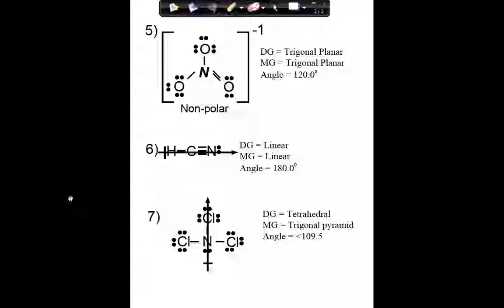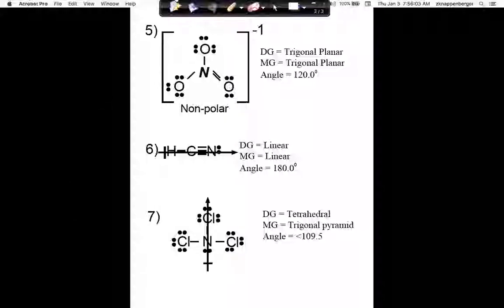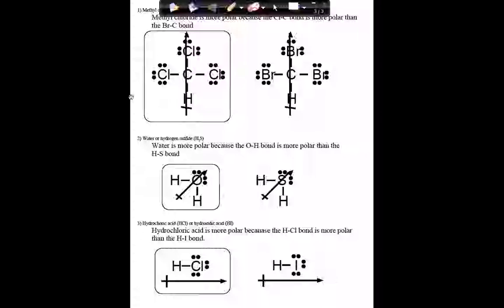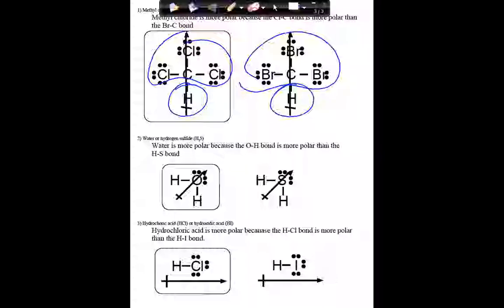The only part of assignment number two that we could do was the second page. We stretched it a little bit and talked about molecules being more polar than other molecules. Looking at example number one, we know this is polar because chlorine is not hydrogen and bromine is not hydrogen. But then the question is which one is more polar?